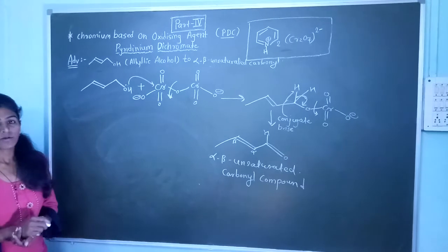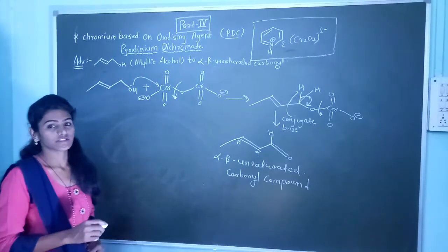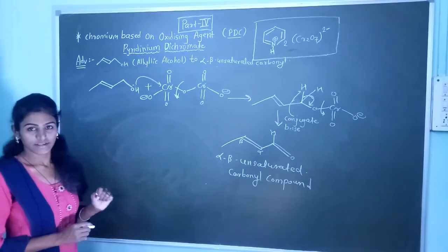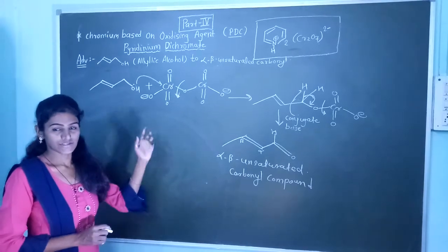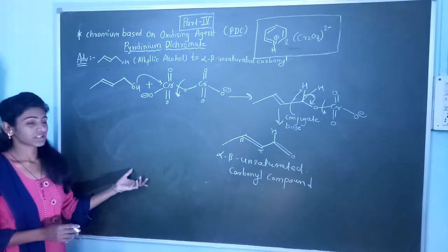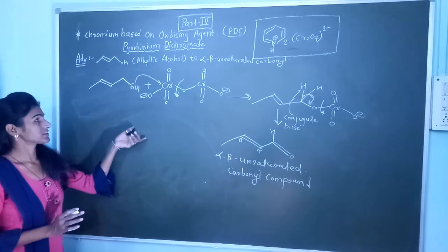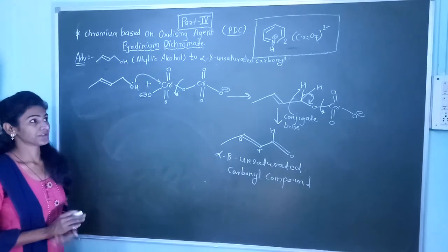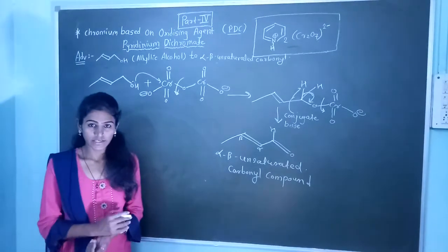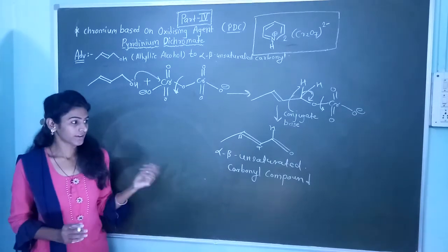PDC is used for oxidation of primary alcohol, secondary alcohol, as well as allylic alcohol. Allylic alcohol oxidation is very important — that is why it is an advantage of this PDC reagent. I hope you all understand this video, and thank you.